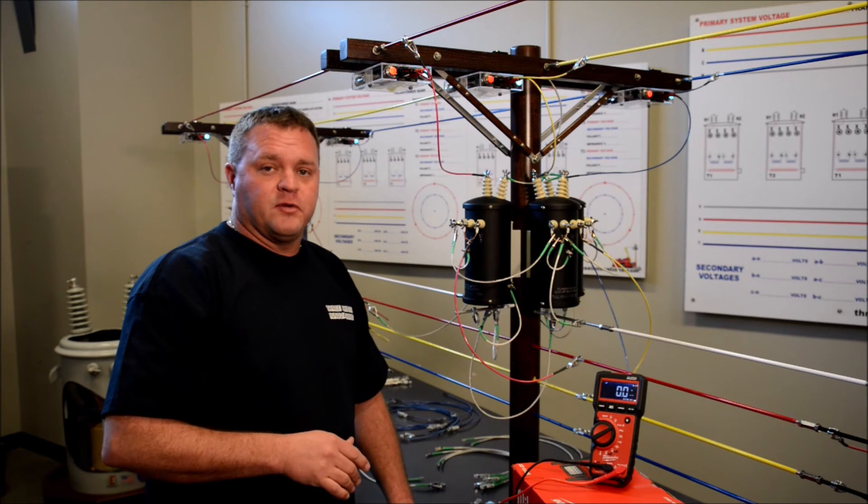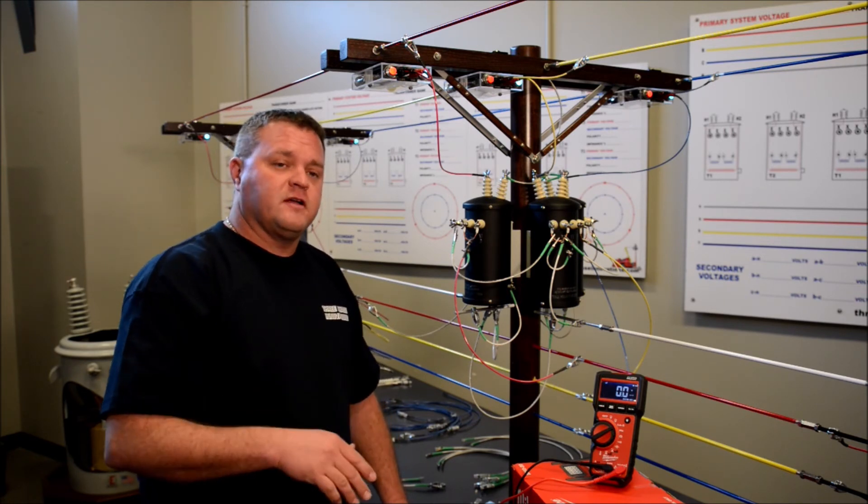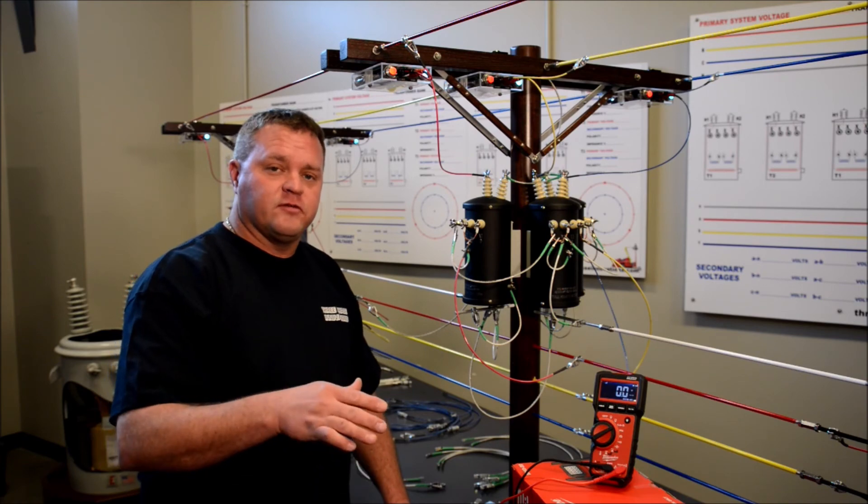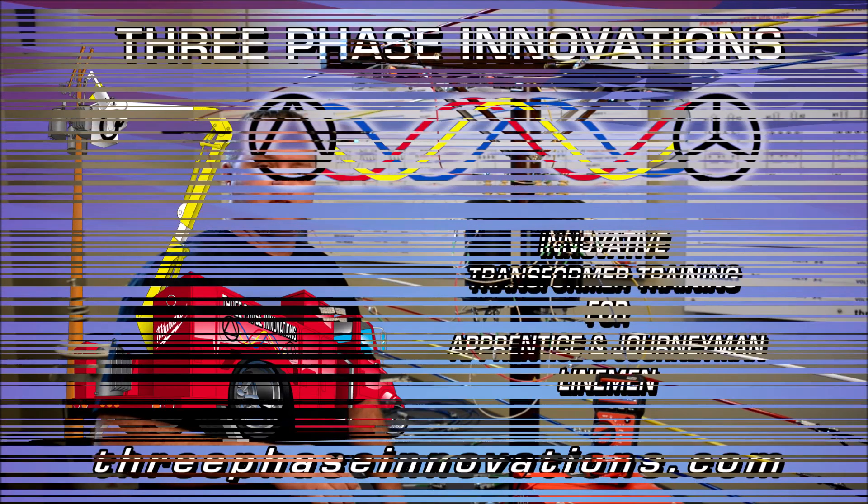So whatever system voltage you're working on, just be aware - if the wye comes loose and there's a jumper in the clear, you could have half the primary voltage on that. Just be aware of that and check out our other videos we have with Three Phase Innovations where we do a lot of different scenarios and situations you might see in the field.